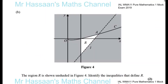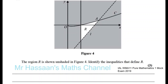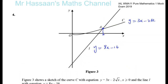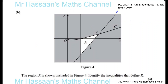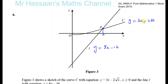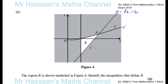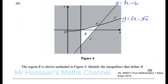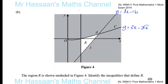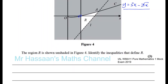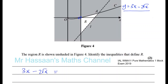Now for part B: the region R is shown unshaded in figure 4, and we need to identify the inequalities that define R. We have the line y equals 8x minus 16, the curve y equals 3x minus 2 root x, and a vertical line on the figure. That vertical line passes through where the curve crosses the x-axis, so we need to find where 3x minus 2 root x equals 0.